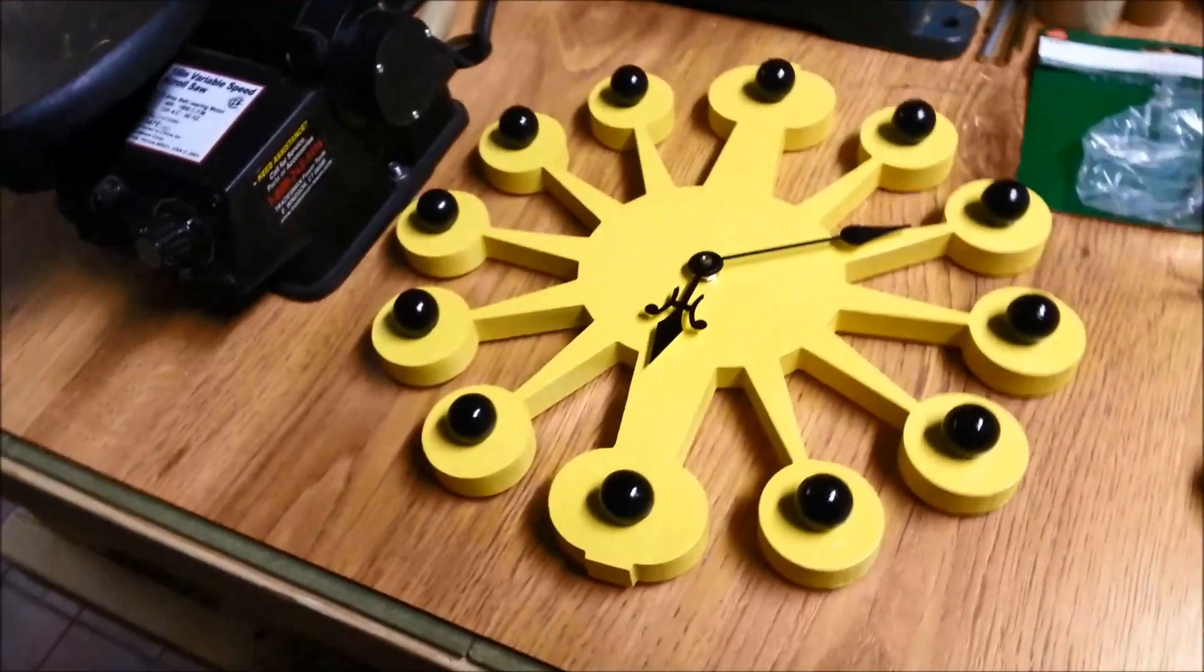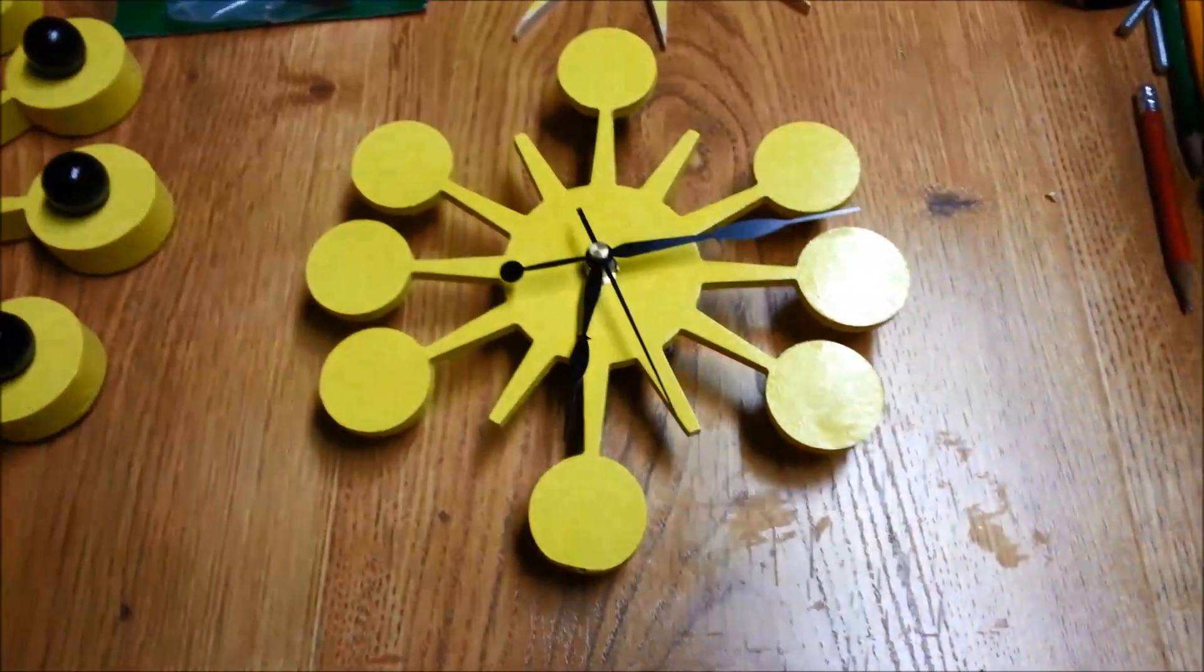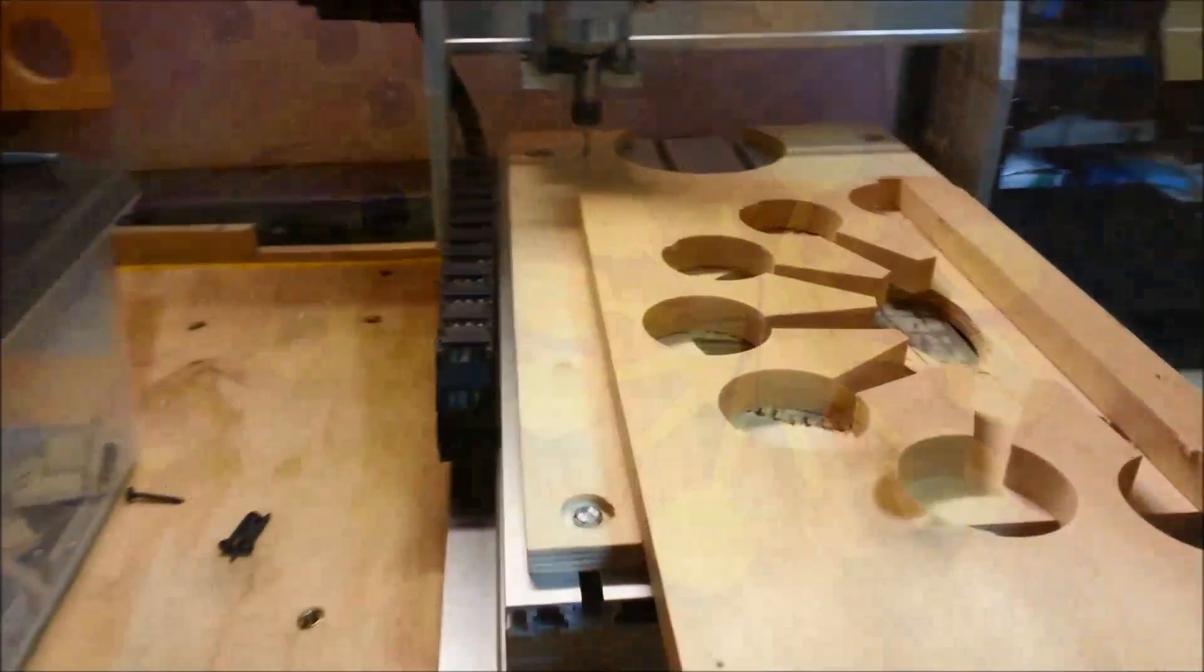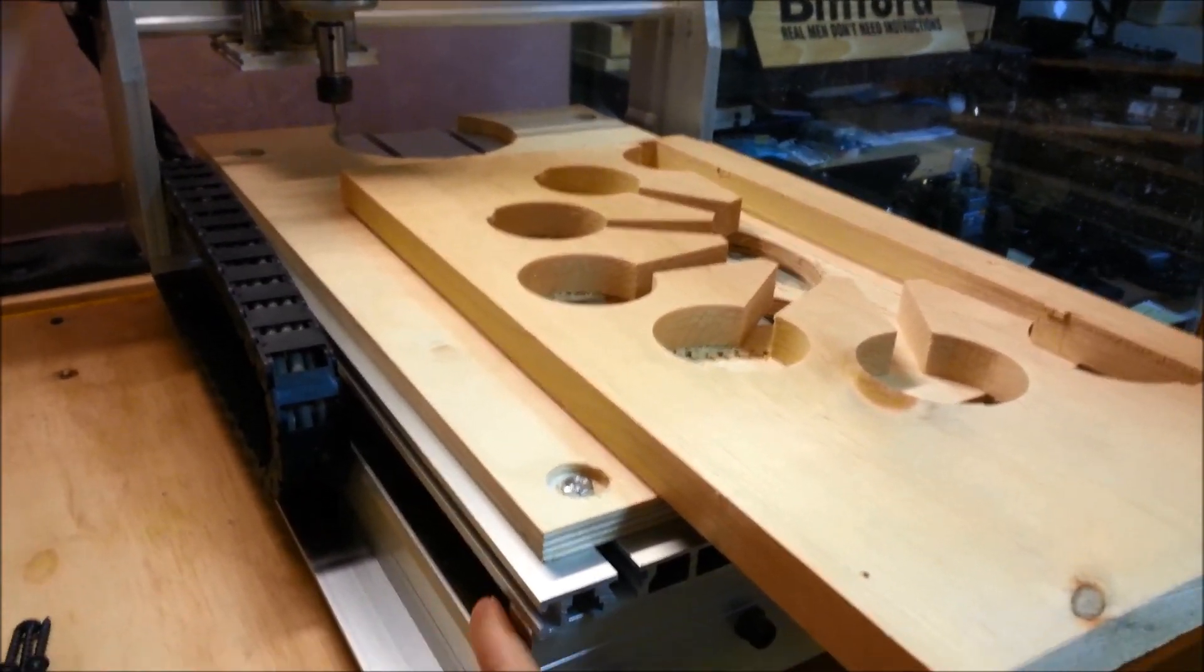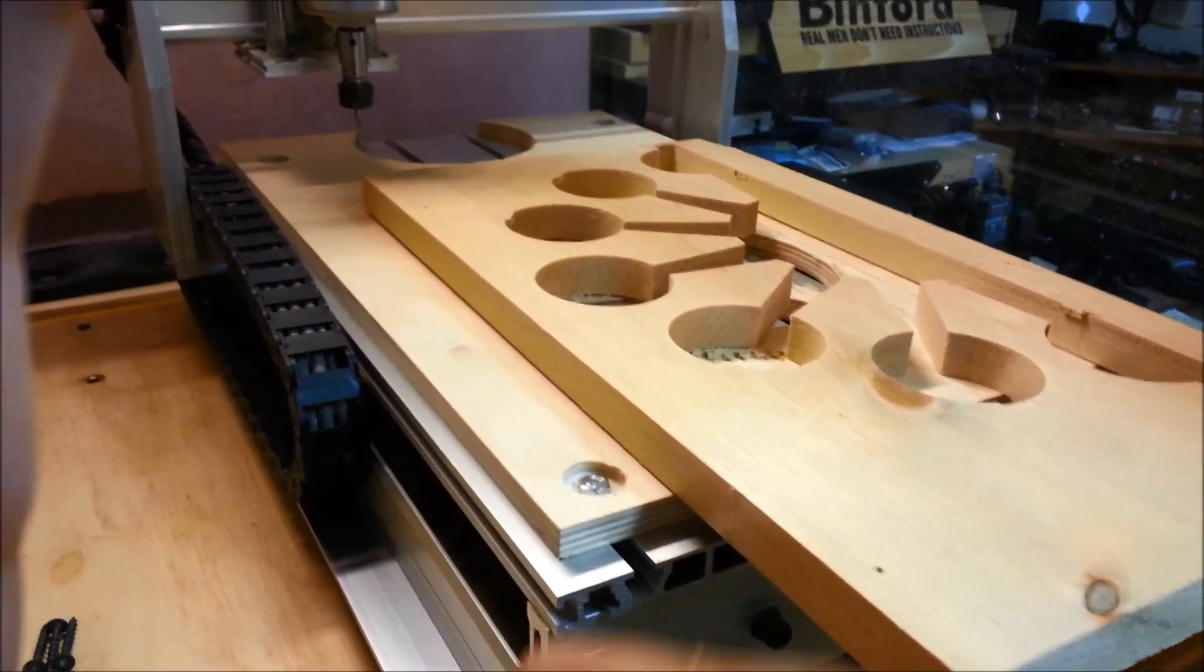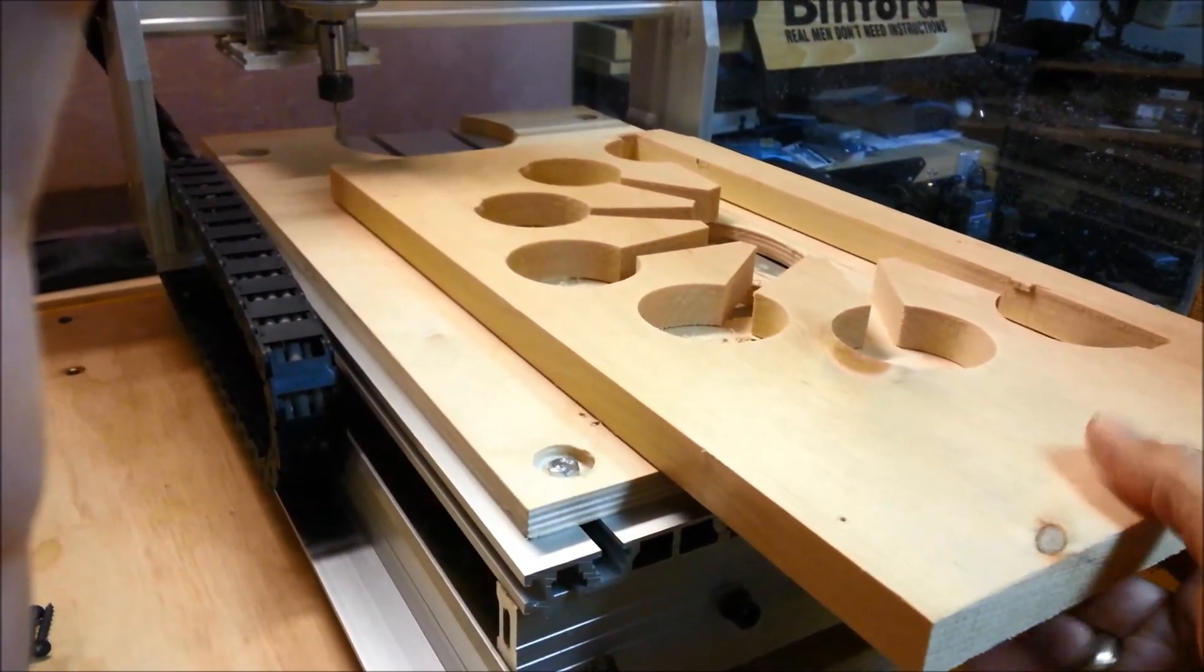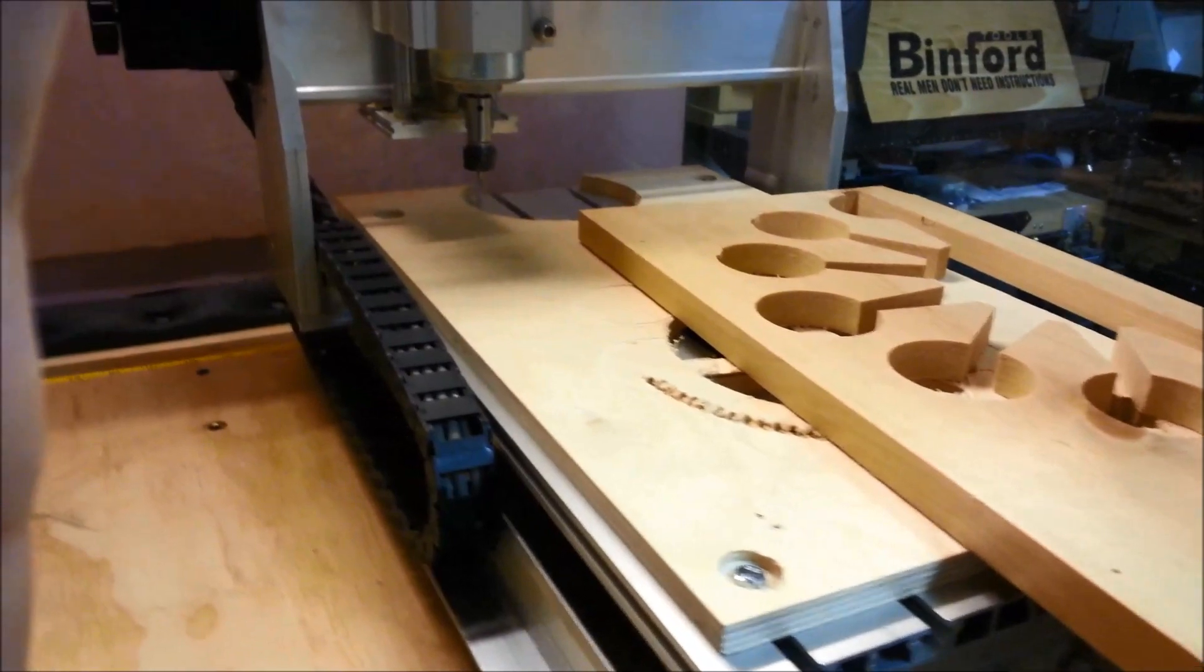This one measures about 14 inches, and this one measures about 9 inches. For hold downs, I've changed from using the mounts that came with the 3040 CNC, with the little bolt down parts, to using a spoil board.